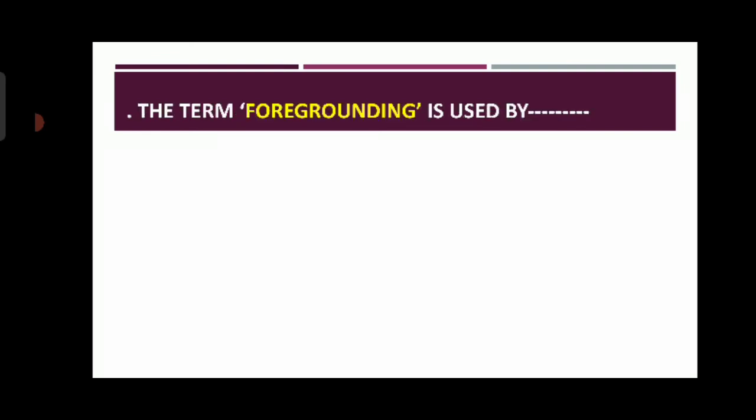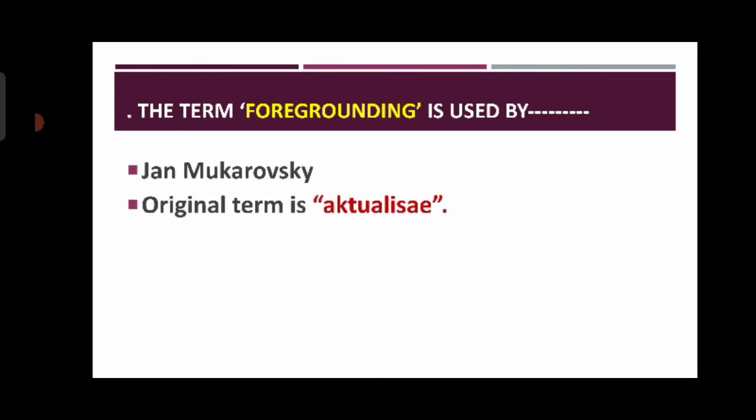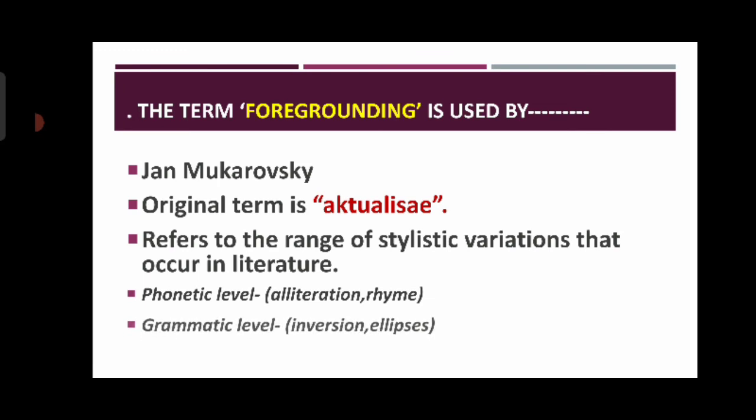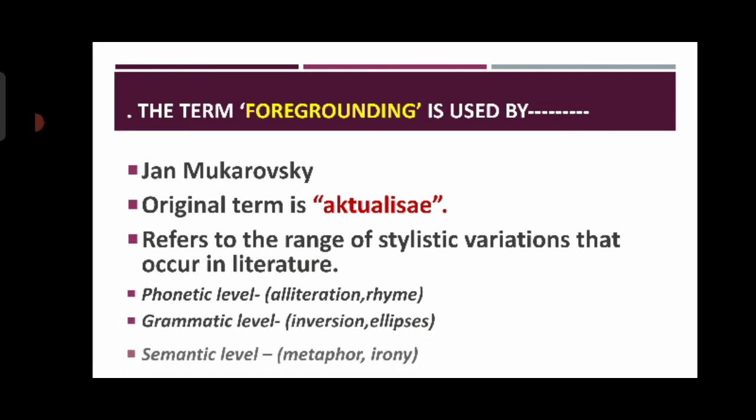The term foregrounding is used by the Czech theorist Jan Mukařovský. The original term is 'aktualizace.' It refers to the range of stylistic variations that occur in literature — at the phonetic level: alliteration, rhyme; at the grammatical level: inversion, ellipsis; at the semantic level: metaphor or irony. In everyday language, communication is the primary purpose, but in literature, the purpose of foregrounding is to disrupt everyday communication. By employing unusual forms of language, it breaks up the reader's commonplace views and replaces them with new and surprising insights.